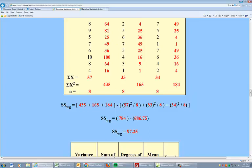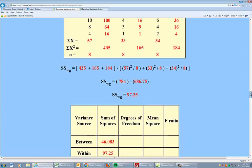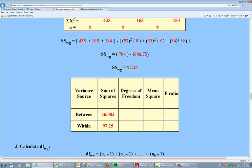Now we have these x-squared totals: 435, 165, 184, and so on. We want to add those to this formula. Use this stuff from the previous formula, SSBG. Do our math. We come up with 97.25. There you go. We have our second piece to the puzzle.